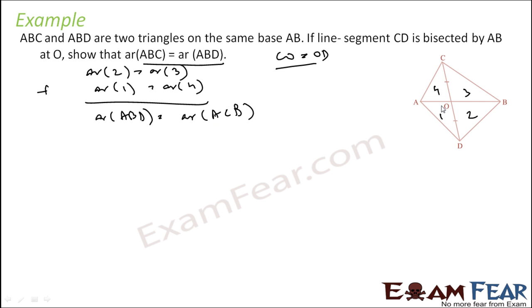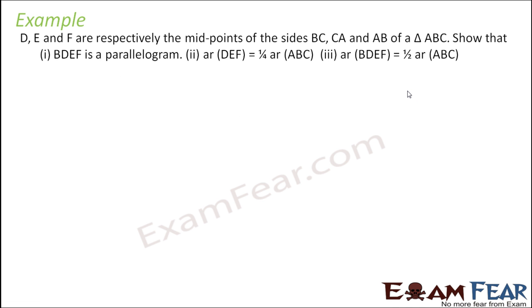You can also do it another way. Area of 3 is equal to 2, area of 4 is equal to 1. In the triangle BDC, DO is a median. In the triangle DAC, AO is a median. So you can just add these two equations to solve.